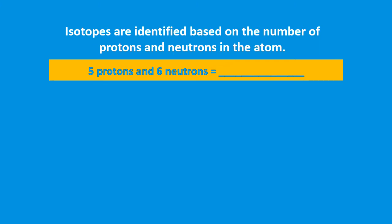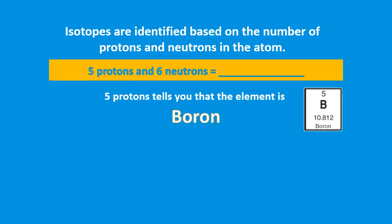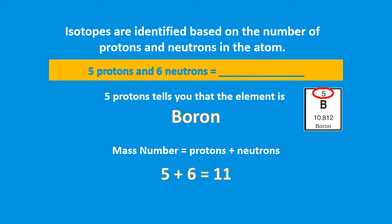If we have an isotope with 5 protons and 6 neutrons, we look at the 5 protons to identify the element. On the periodic table, an atomic number of 5 tells us it's boron. The mass number — the sum of protons and neutrons — would be 11. To name this isotope, we use the element name followed by a hyphen and the mass number: boron-11.